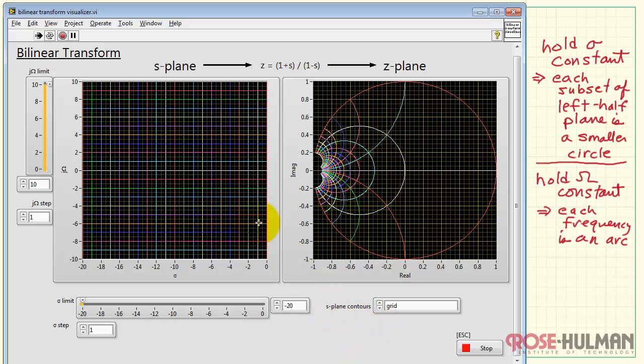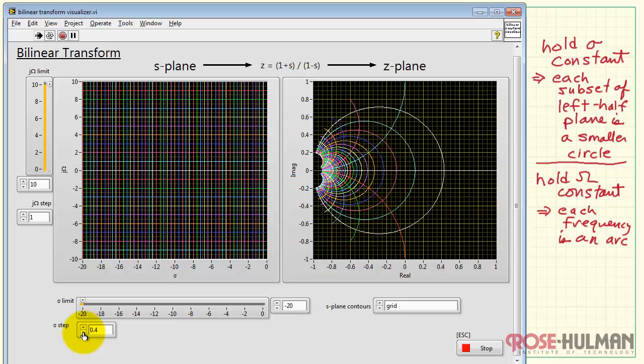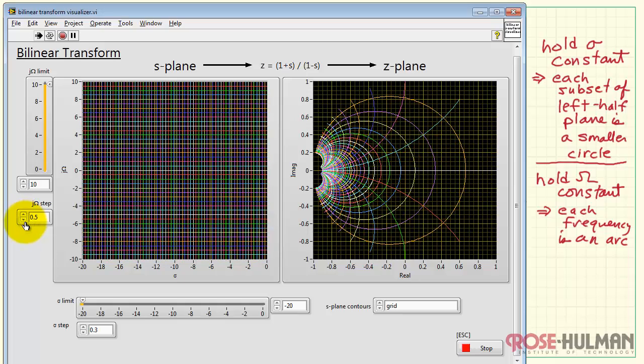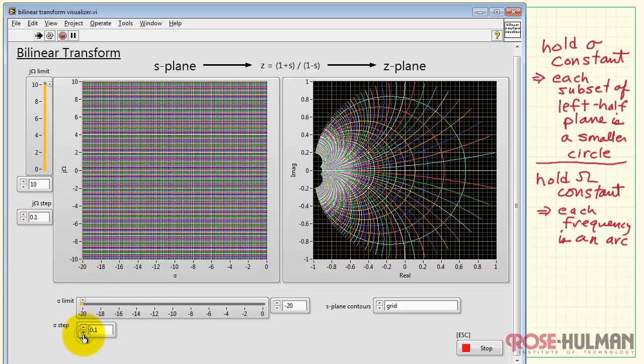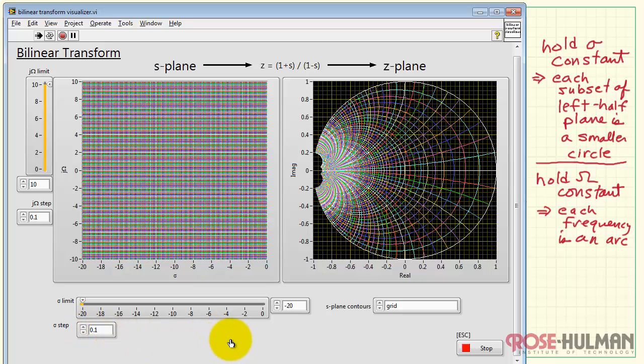Now we can get both of those going at the same time. I can get contours going both vertically and horizontally. I can also control the density of my straight line contours in the s-plane. So I have higher density going this way, let's get higher density going vertically too. So we see that a uniform pattern in the s-plane, uniform arrangement of contours, translates into circular arcs in the z-plane.